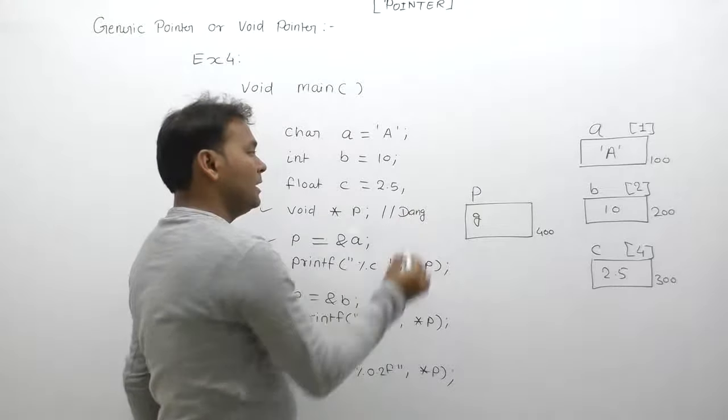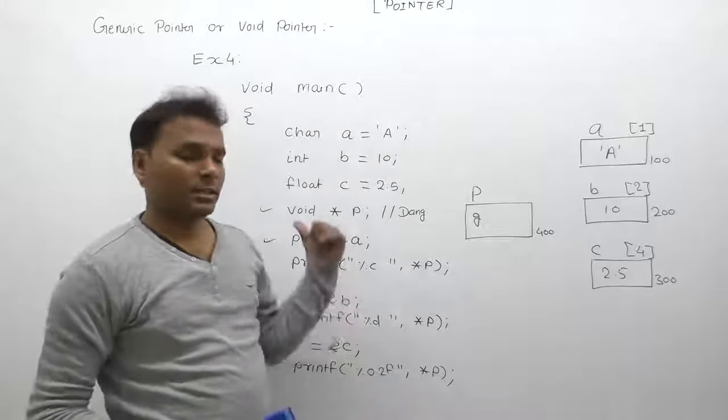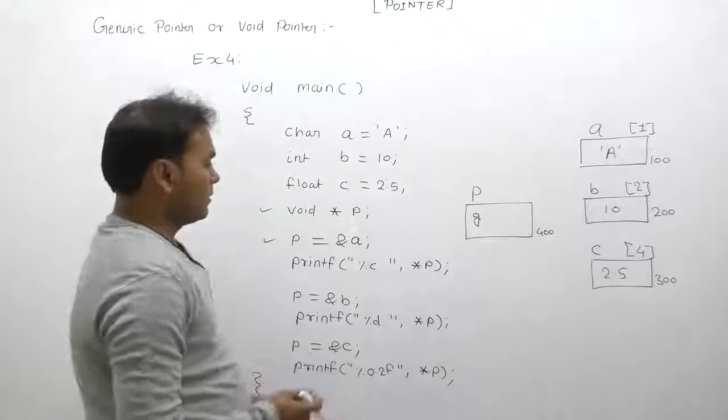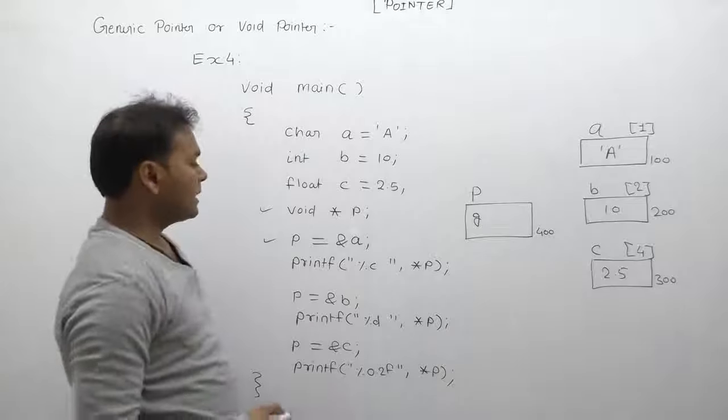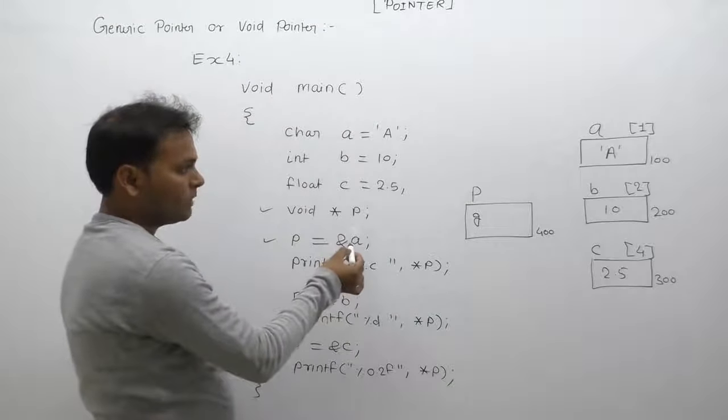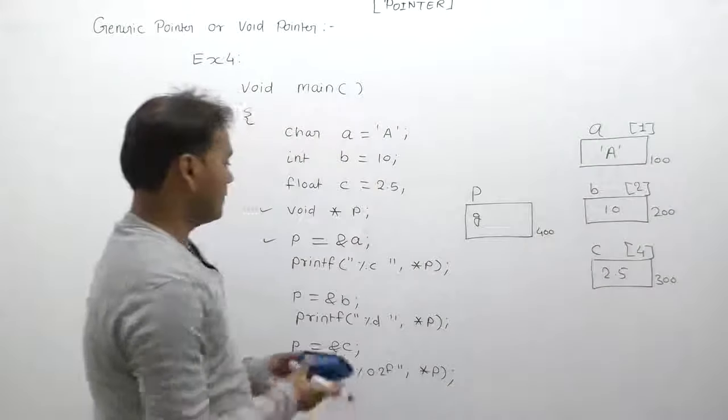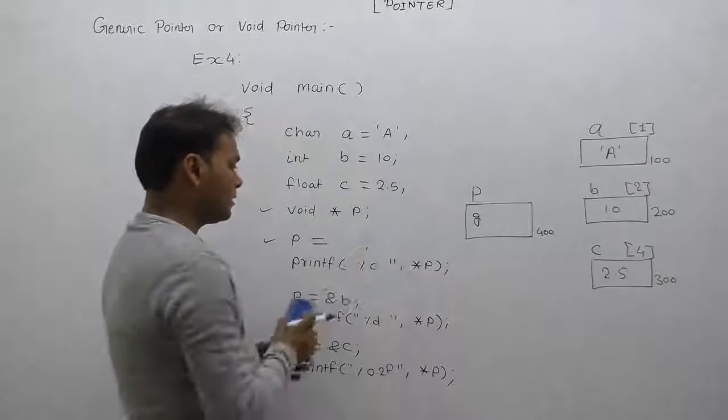Next, the fifth statement: p is assigned the address of a. According to the diagram, a's address is 100. That's why p is initialized or assigned by 100.